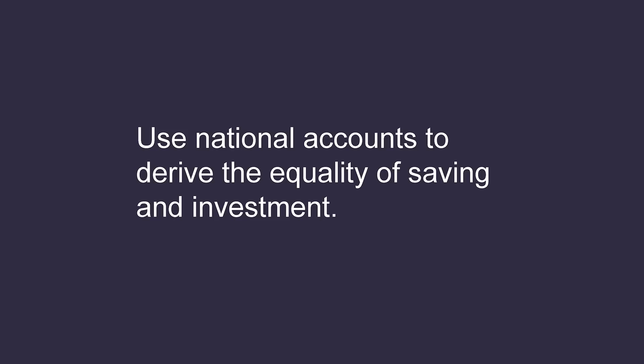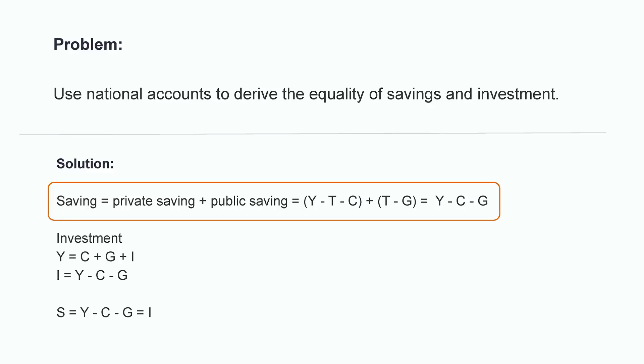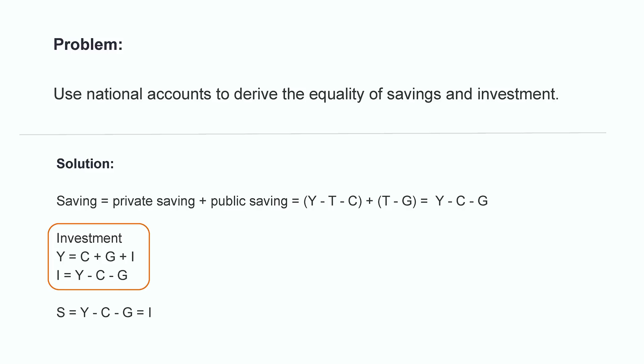Time for a quick exercise: use national accounts to derive the equality of savings and investments. Remember that saving is a sum of private and public saving. Private saving is equal to household income after tax and consumption. Public saving is the difference between taxes and government spending. Total savings are equivalent to total income minus consumption and government spending. We derive the value of investment from the GDP equation: national income equals the sum of consumption, government spending, and investment. Rearranging for investment, we get that investment is equal to income minus consumption minus government spending — which is equivalent to savings.